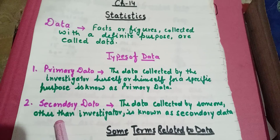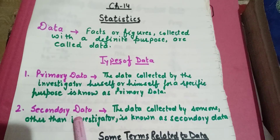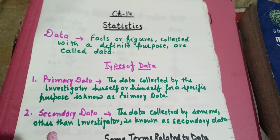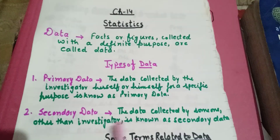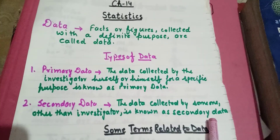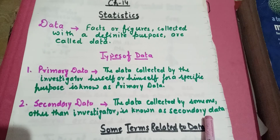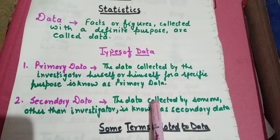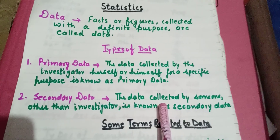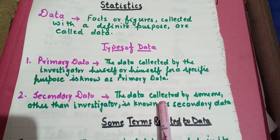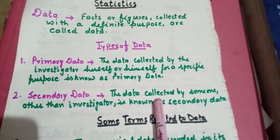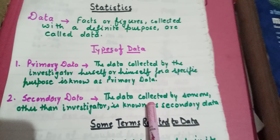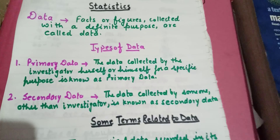The second type of data is secondary data. The data collected by someone other than the investigator is known as secondary data. For example, taking any information or data from the internet or a newspaper — such as minimum and maximum temperature or cricket scores.